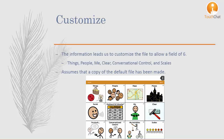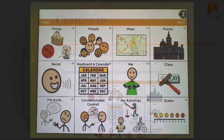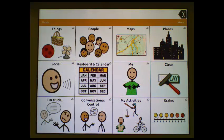Let's take a look at how we would customize a grid on the device. Using the TouchChat app and the Communication Journey Aphasia vocabulary for the customization, I will create the location grid I need. I have already made a copy of the default file. My plan is to take this 12-location grid to a 6-location grid based on my client's current needs.